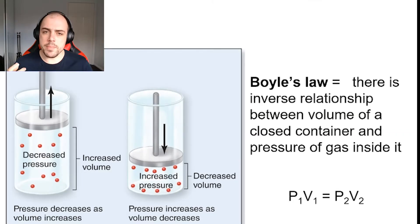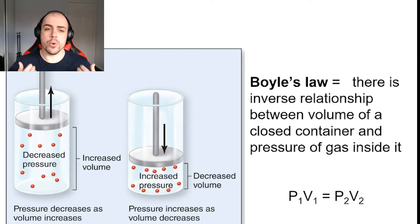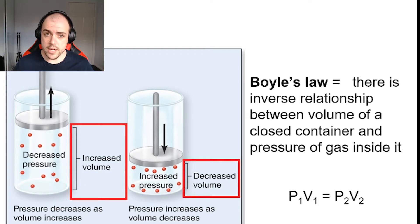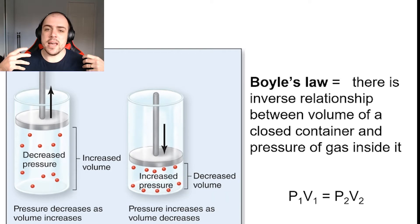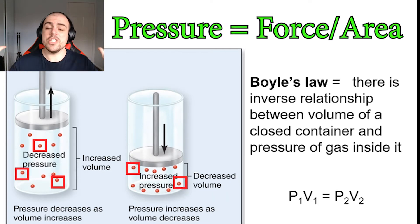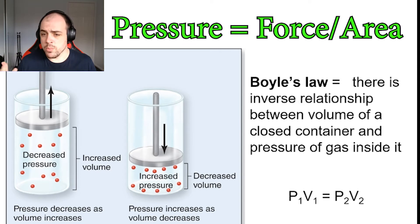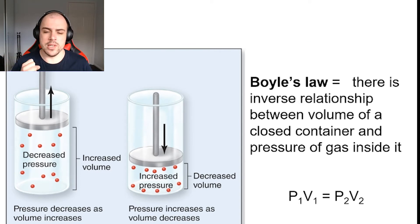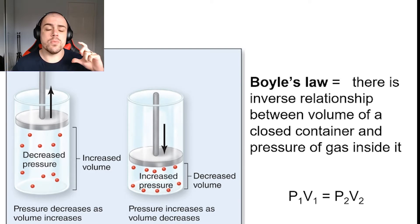There are two main parameters that are being altered and changing constantly as we breathe. These are volume — the volume of our lungs — and the pressure that is being generated by changing that volume. To predict what is going to happen here, we rely upon Boyle's law, which tells us there is an inverse relationship between volume and pressure.